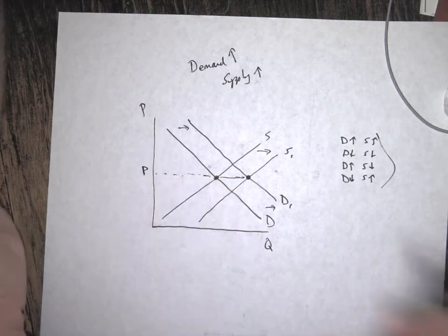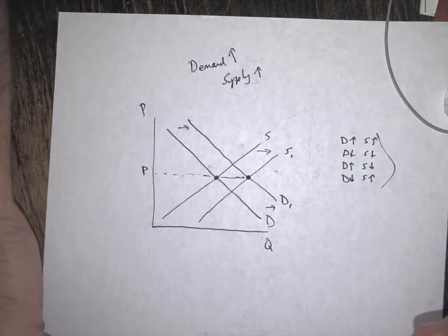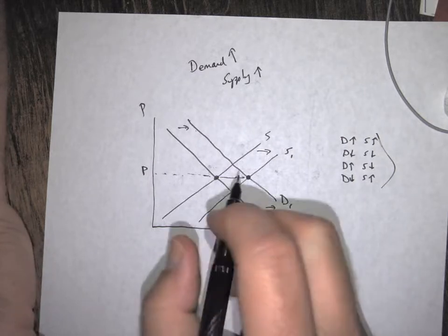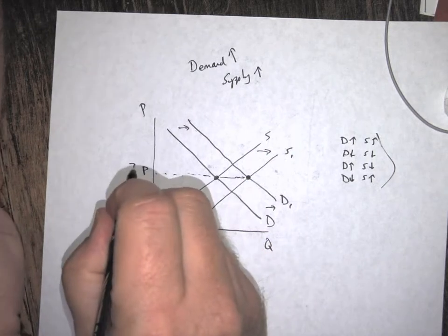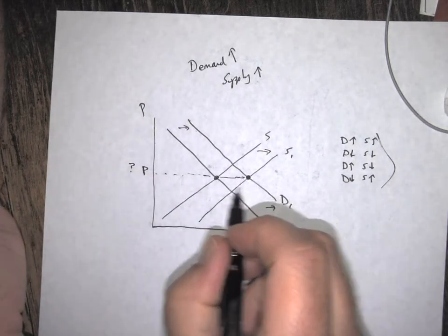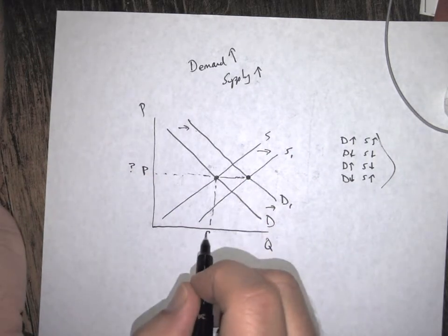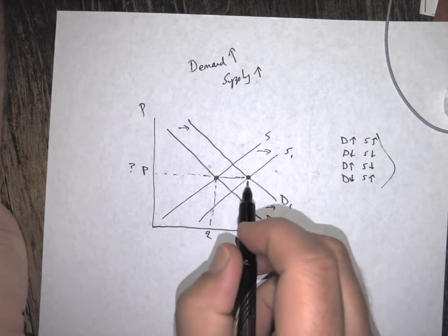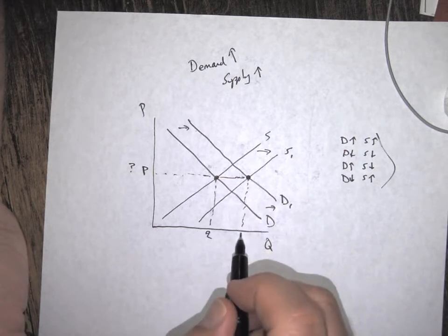So what that tells us is that the supply and the demand can change, that's not going to change the price. So this is what we call indeterminate. This was our quantity and our first equilibrium. Now equilibrium quantity is